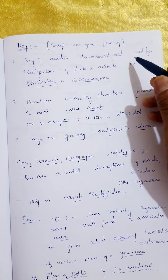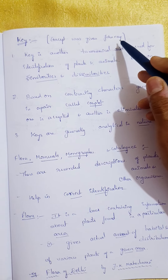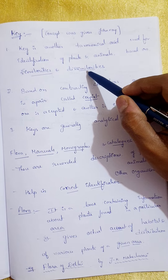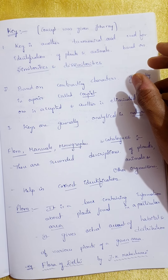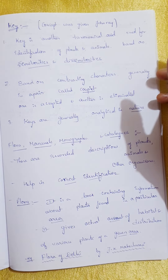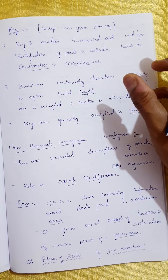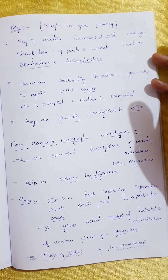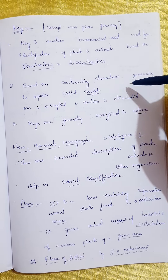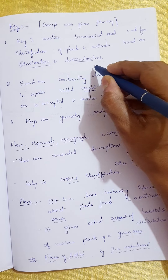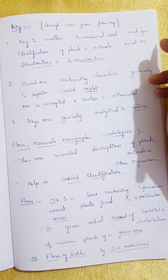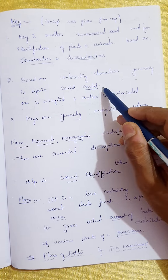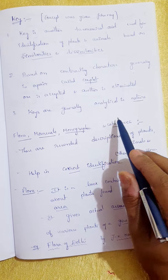Next, an important taxonomical aid is the key. The concept was given by Genre. A key is a taxonomical aid used for identification of plants and animals based on similarities and dissimilarities, called a couplet. Contrasting characters — for example, dominant versus recessive, tall plant versus dwarf plant — are represented as a couplet. Among the two contrasting characters, one is accepted and the other is eliminated. Keys are generally analytical in nature.